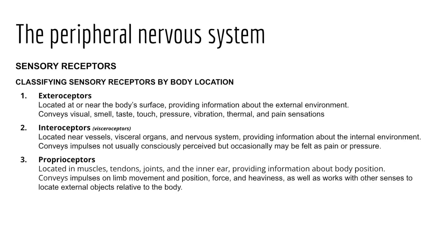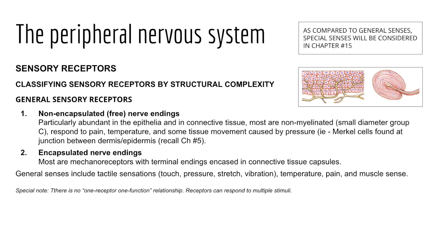We can also classify sensory receptors by structural complexity, lumping them into non-encapsulated (free nerve endings) or encapsulated nerve endings. These are general sensory receptors — in contrast to special sensory receptors covering taste, smell, balance, equilibrium, and sight, which are addressed in Chapter 15. Non-encapsulated free nerve endings have no complex sensory structure; they're the most common type, responding to pain or thermal stimuli, with some specialized around hairs to detect light touch when surface hairs move.